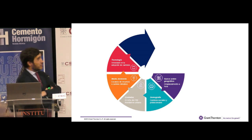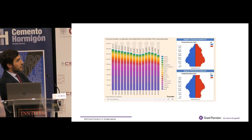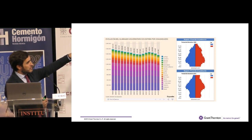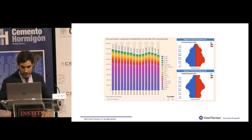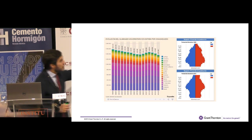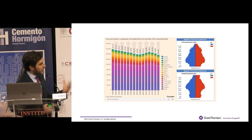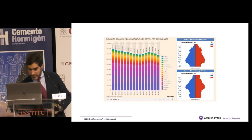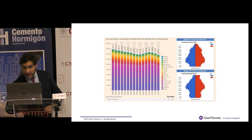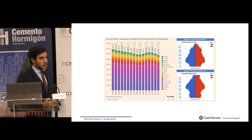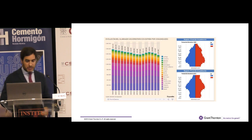En esta siguiente diapositiva mostramos una gráfica de la evolución del alumnado universitario en España por comunidades. A la izquierda vemos que se reduce el número de alumnos que van a la universidad en España, y a la derecha vemos la edad de esa población en 1995 y en 2016. Vemos que hay una demanda de jóvenes con estudios para poder desarrollar esos trabajos que se van a demandar gracias a esa transformación digital.